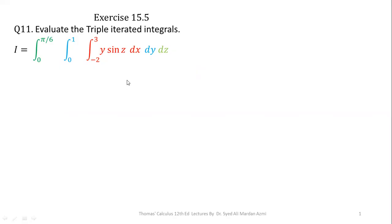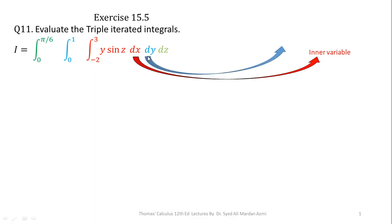Before starting to solve this question, we should know some terminologies and basic things about triple integrals. In triple integrals, we have three variables with respect to which we perform integration. The most inner variable, written most inside, is called the inner variable. In this question, x is our inner variable. The next variable y is called the central variable with limits 0 to 1. The most outer variable z is called the outer variable with limits 0 to π/6. We will always perform integration from the inner variable outward — first with respect to x, then y, then z.